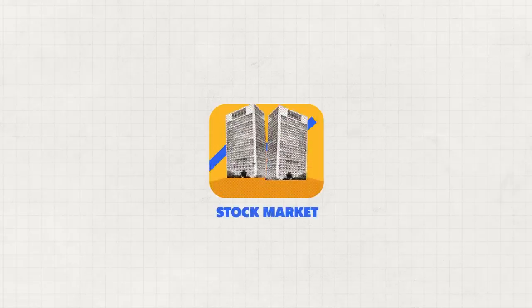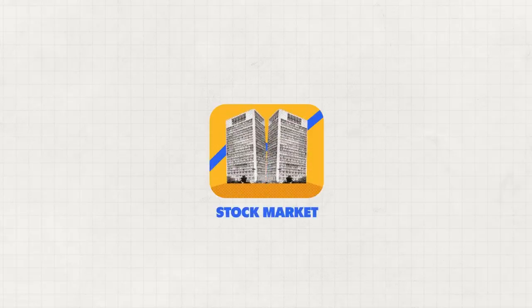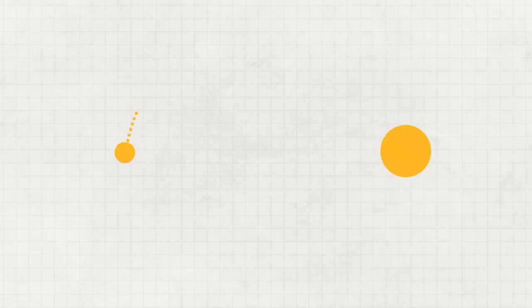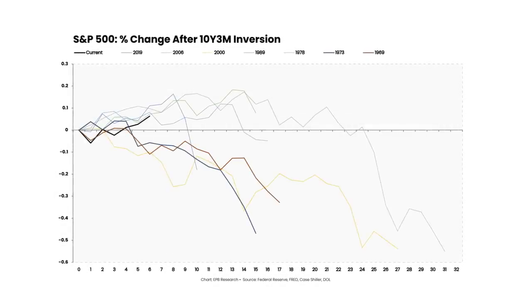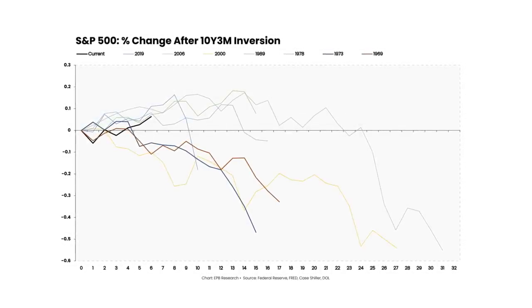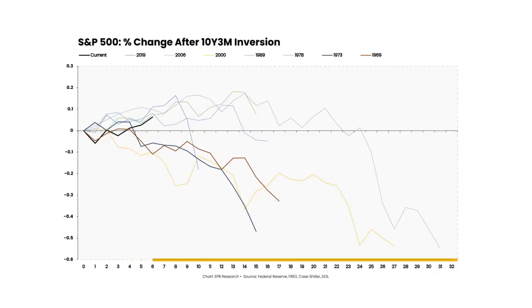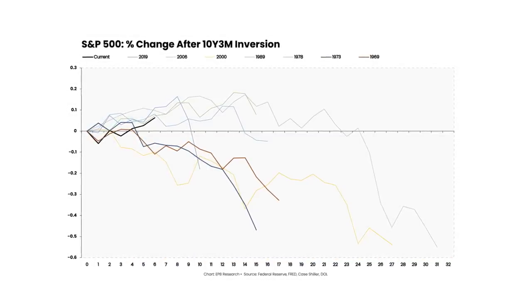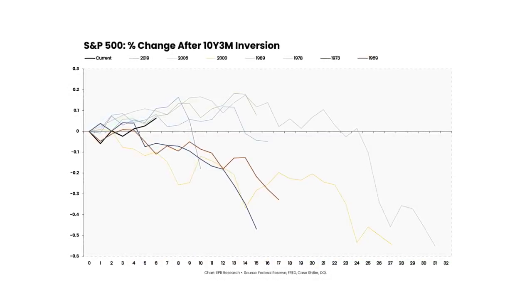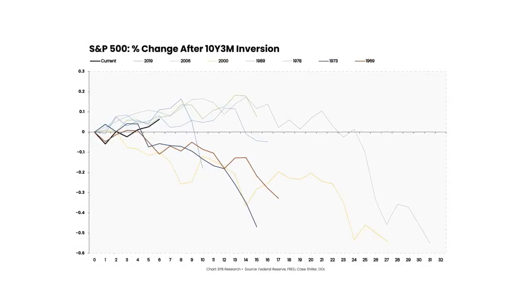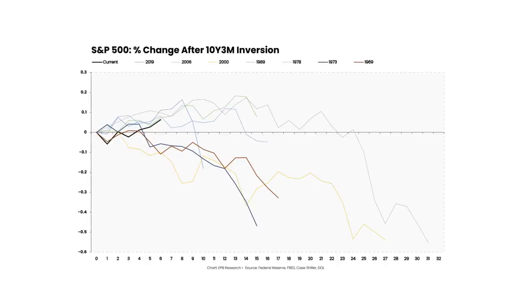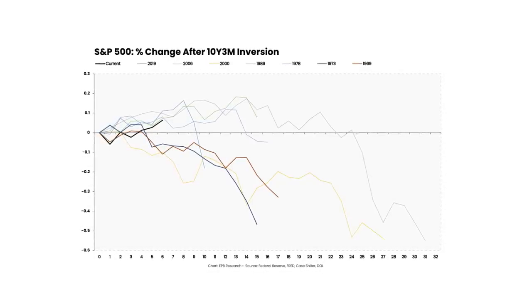What about stock market performance? The same conundrum plagues investors because the final outcome is clear, but the path to get there can be quite different, oftentimes with no logical explanation as to why. This chart shows the performance of the S&P 500 after the 10-year 3-month curve inverts, with the bottom axis showing the number of months after the initial inversion. After the 10-year 3-month curve inverts, the stock market almost always declines in the following 2-3 years, with a mean and median decline of roughly 14% over 15 months.